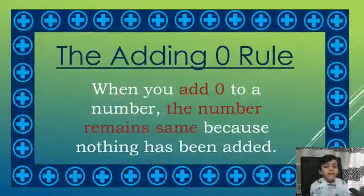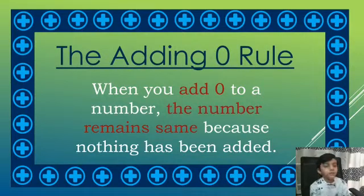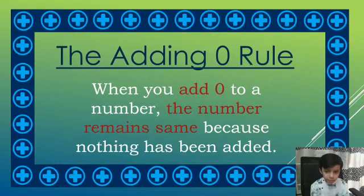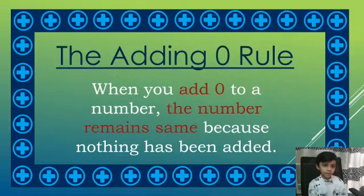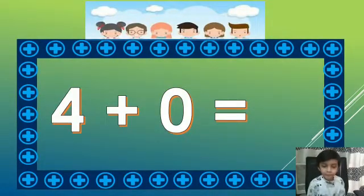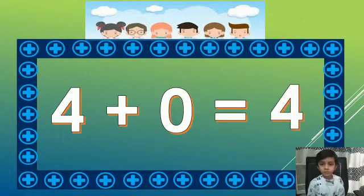Here we will learn the adding 0 rule. When you add 0 to a number, the number remains the same, because nothing has been added to the number. Like 4 plus 0 equals 4.